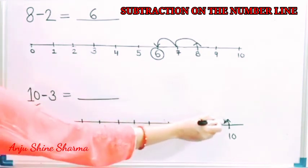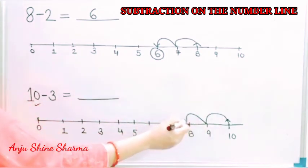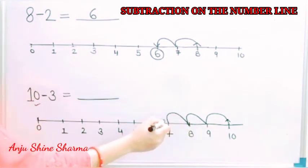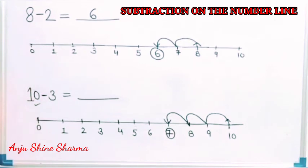So our answer is 7. 10 minus 3 is equal to 7.